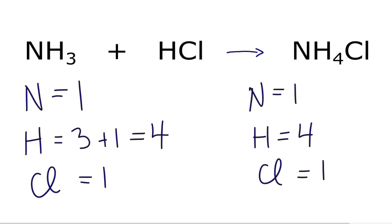So the trick here, though, is to count all the hydrogens on the reactant side. We have the three here and the one here, and that gives you four. In this case, that matches the four over here. Everything else is balanced.